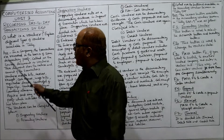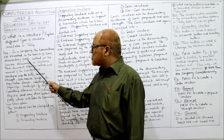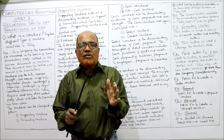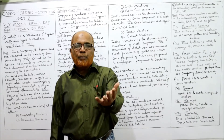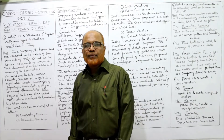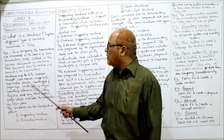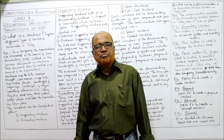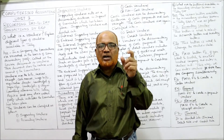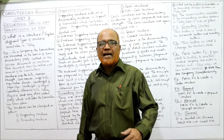The first question is: what is a voucher and explain different types of vouchers available in Tally? In a company, transactions are recorded on the basis of some documentary proof. Whenever we record any transaction, it is recorded on the basis of documentary proof in written form. These documents through which entries are recorded are called source documents or vouchers. They show the nature, amount, and date of the transaction.